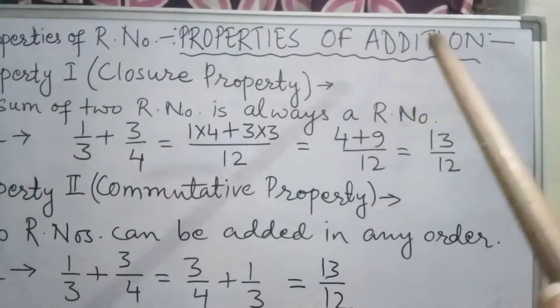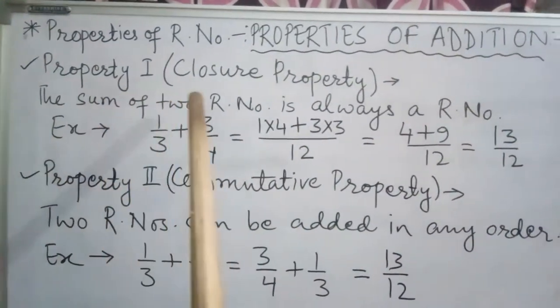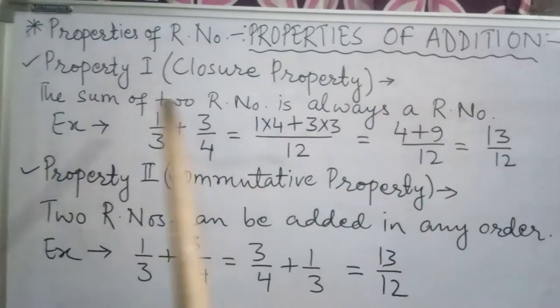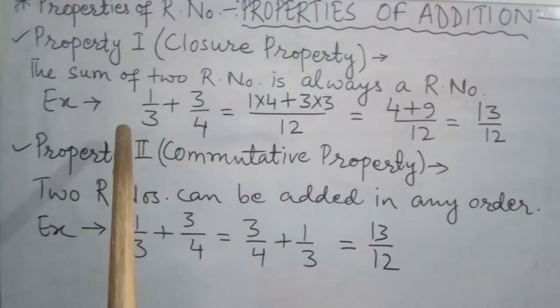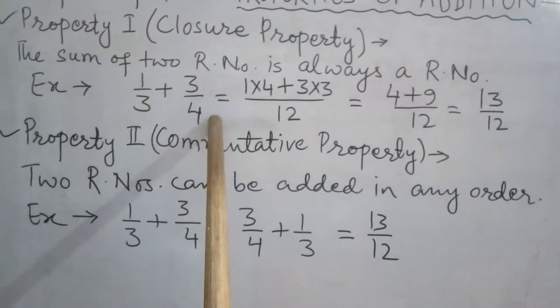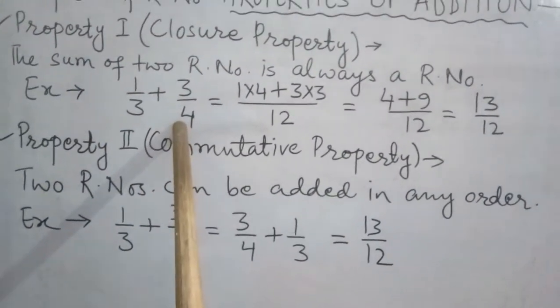Properties of addition. First property is closure property. In this case, the sum of two rational numbers is always a rational number. Here I have taken two rational numbers with different denominators.